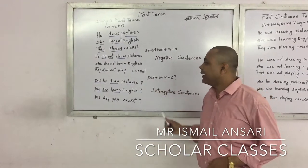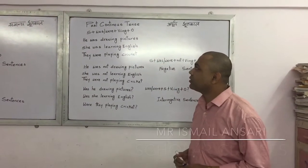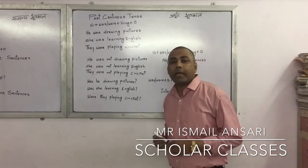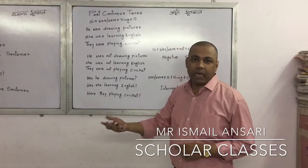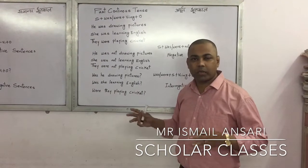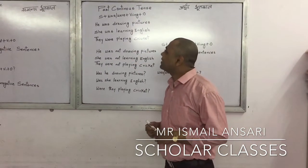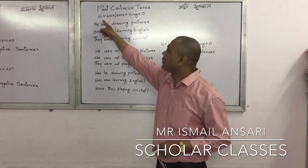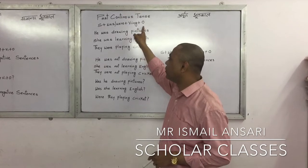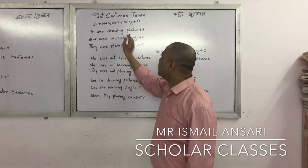Now we move to past continuous tense, also known as Apurna Budh Kaal — that is, when an action was ongoing in the past. The formula for past continuous tense is: subject plus was/were plus first form of the verb with -ing plus object. For example: He was drawing pictures.